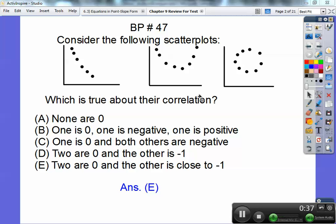There's no correlation right here. So it says here, one is zero, one is negative, one is positive. That's not true either. One is zero, and both others are negative. That's not true either, because there's two of them that are zero. So it's either choice D or E. Two are zero, and the other is close to negative one. Well, I can't say that is negative one, because it's not a perfectly straight line, so it's going to be choice E. There's your answer staring right at you.